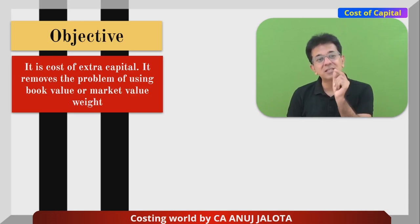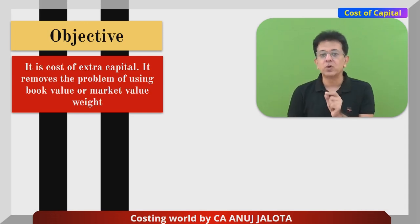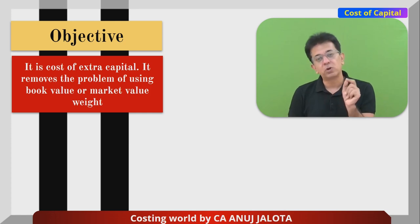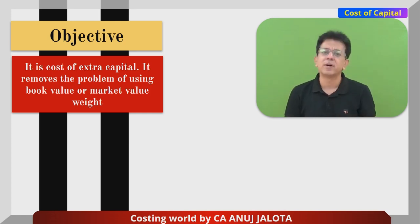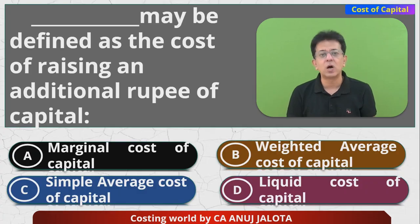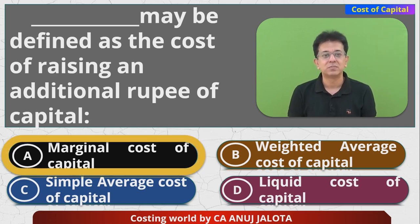So Marginal Cost of Capital is the cost of extra capital being raised. It removes the problem of choosing between book value or market value weights. Out of the four options, the answer is A — Marginal Cost of Capital. That's the correct one.